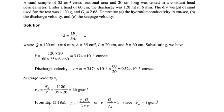Determine the hydraulic conductivity in centimeter per second, the discharge velocity, and then the seepage velocity. The given values are: discharge q = 120 ml, time = 6 minutes, area = 35 cm², length = 20 cm, and head h = 60 cm.